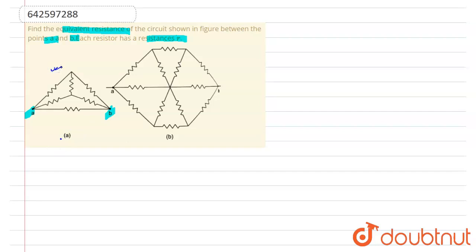Now, you can see that if you give a potential over here as X, then the potential over here will also be X. So for this resistor, at both ends the potential is the same. That's why from this resistance, there is no flow of current — current will be zero.